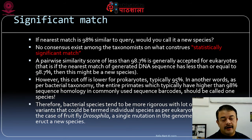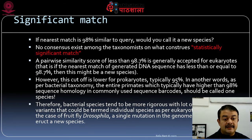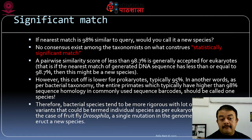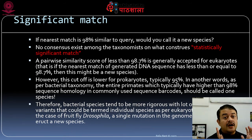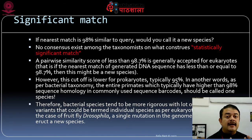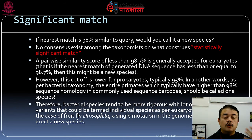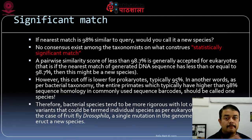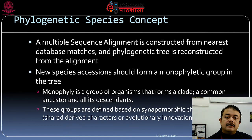If the nearest match is 98.8% or above, you cannot call it a new species; if it is 98.7% or lower, you potentially can — providing all other criteria are met. The cutoff is lower for prokaryotes: for bacteria it is typically 95%. In bacterial taxonomy, organisms with higher than 98% sequence homology in common are considered one species, which is quite rigorous. The same logic has gradually been extended to eukaryotes.